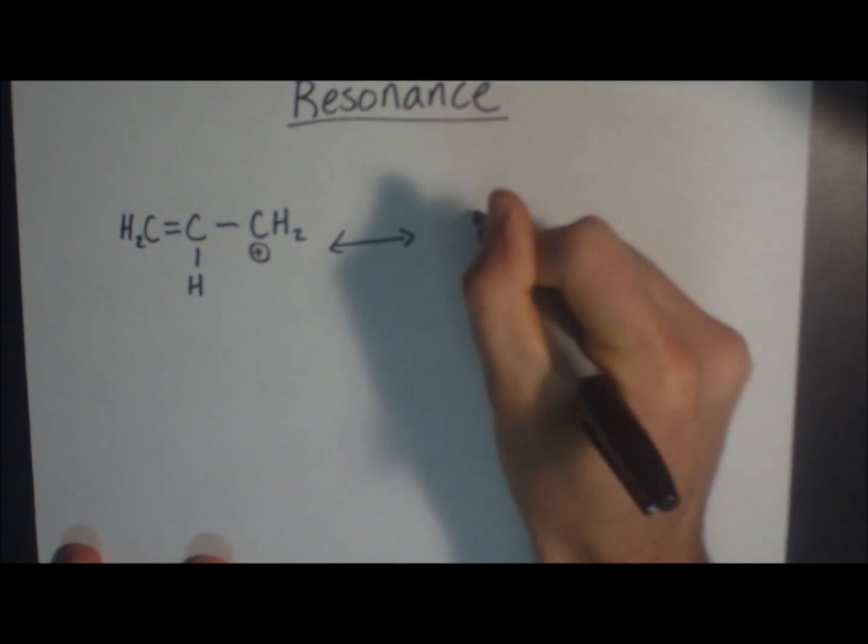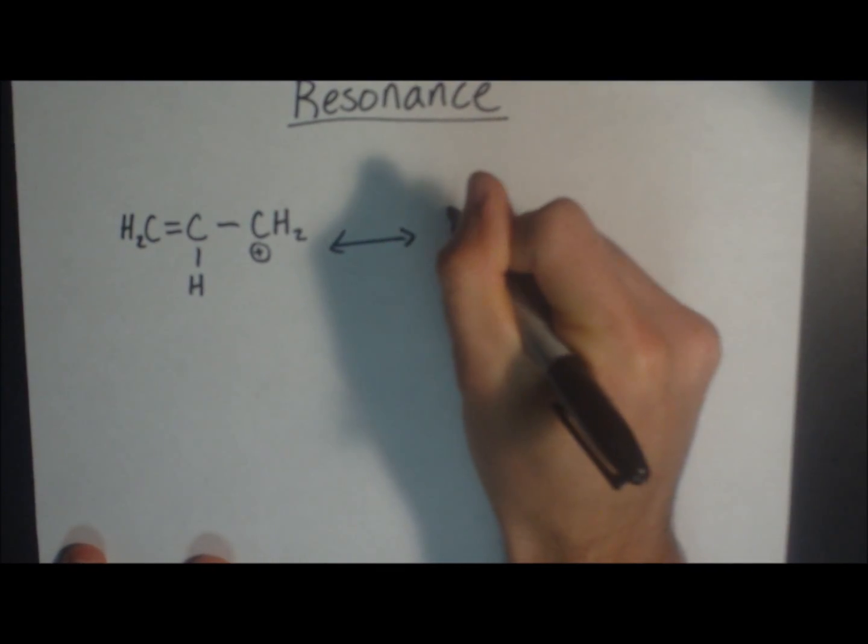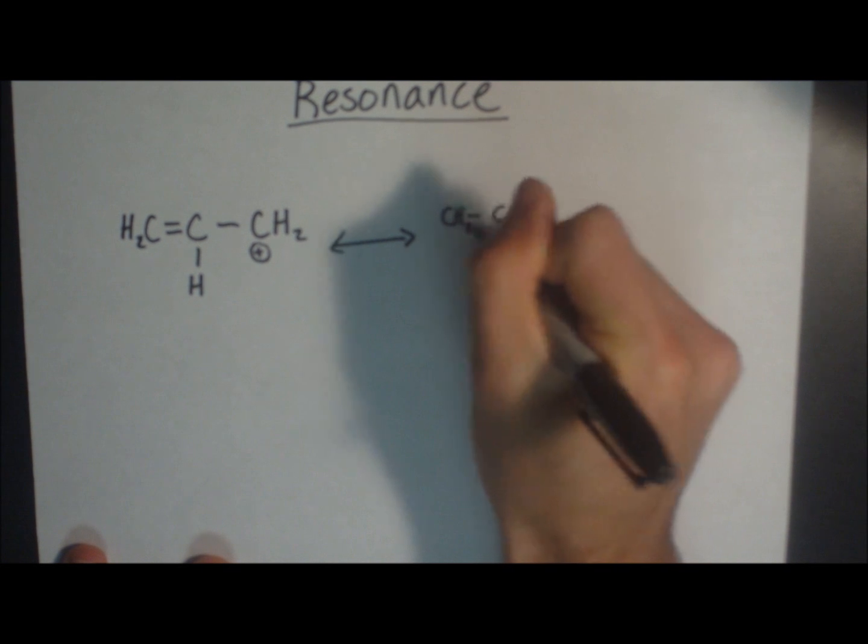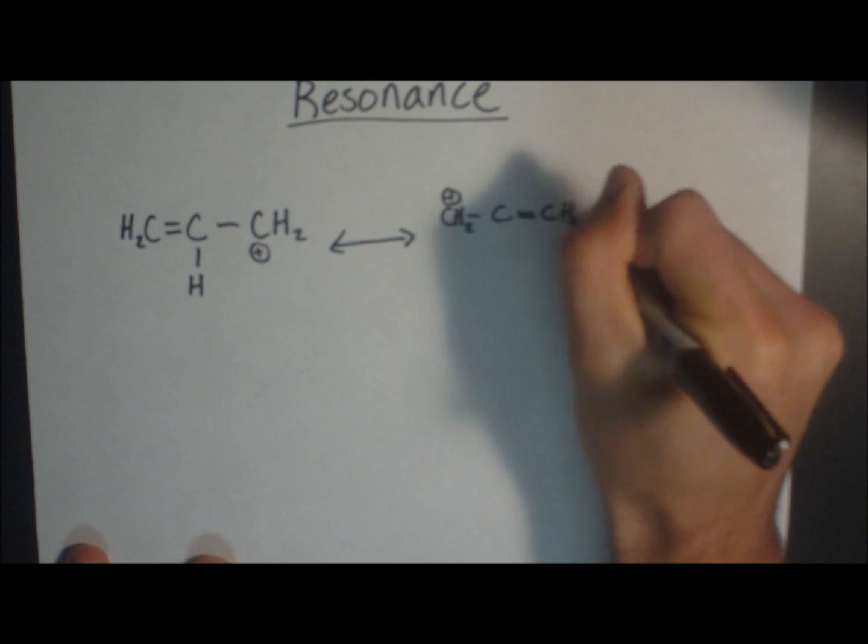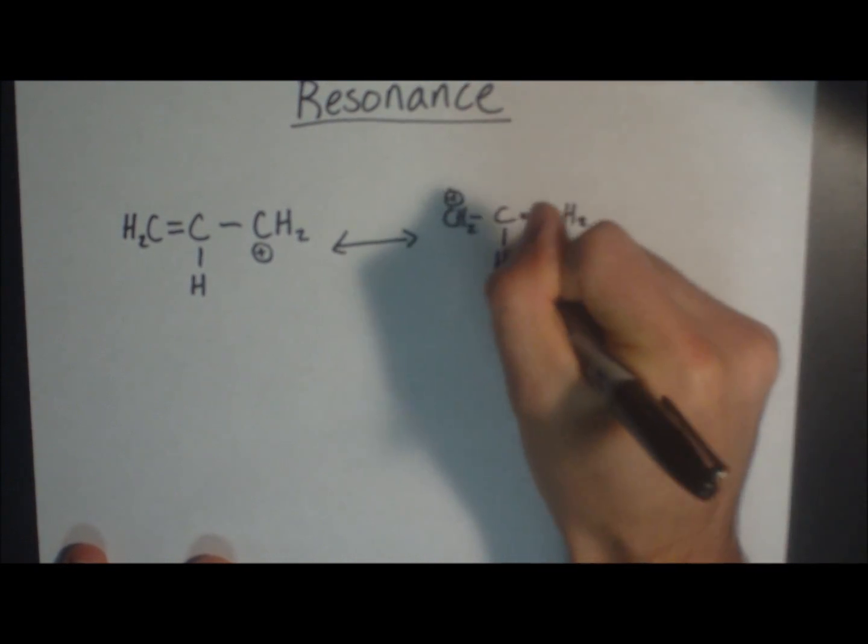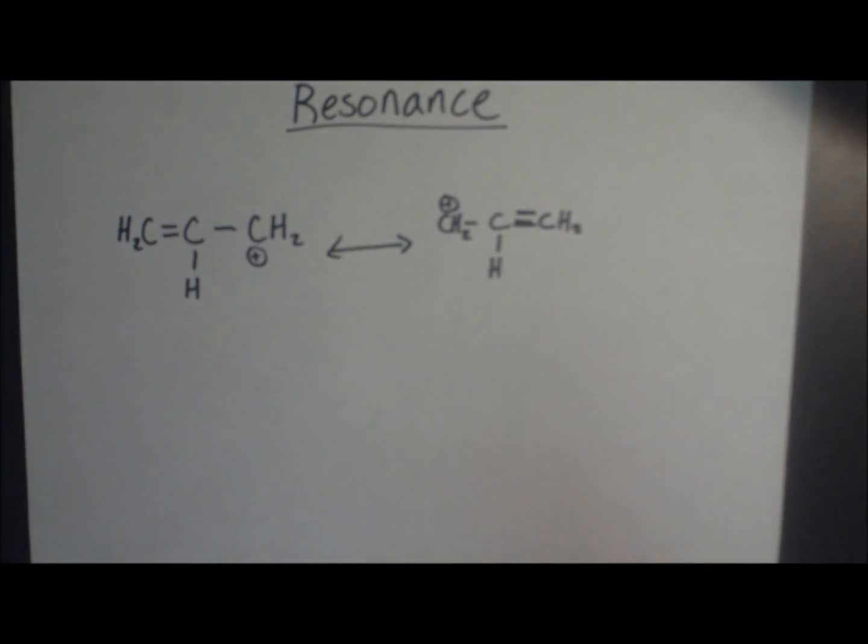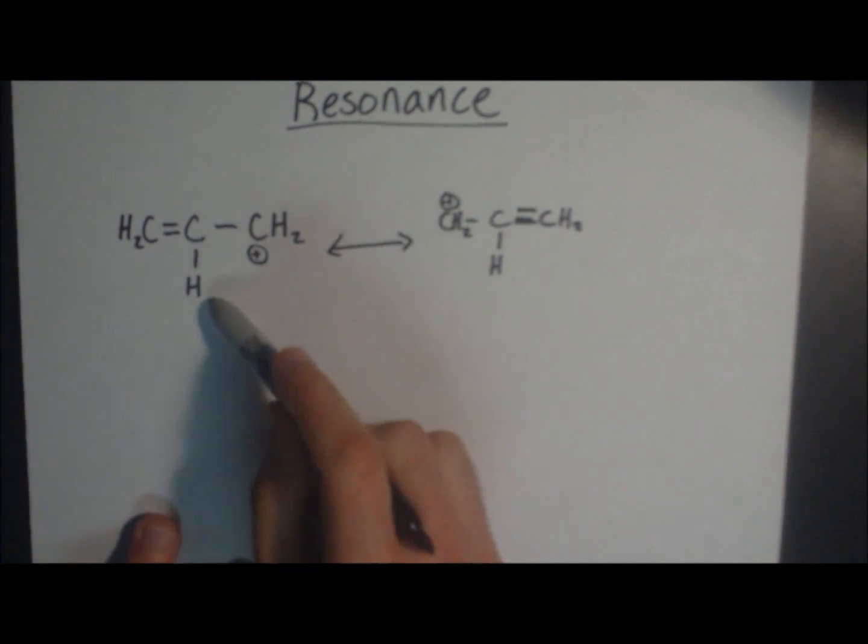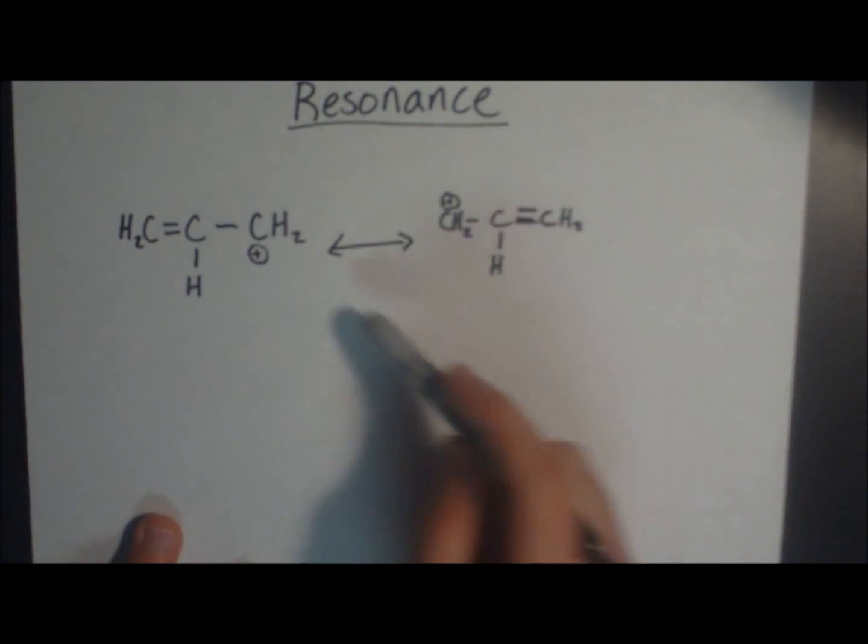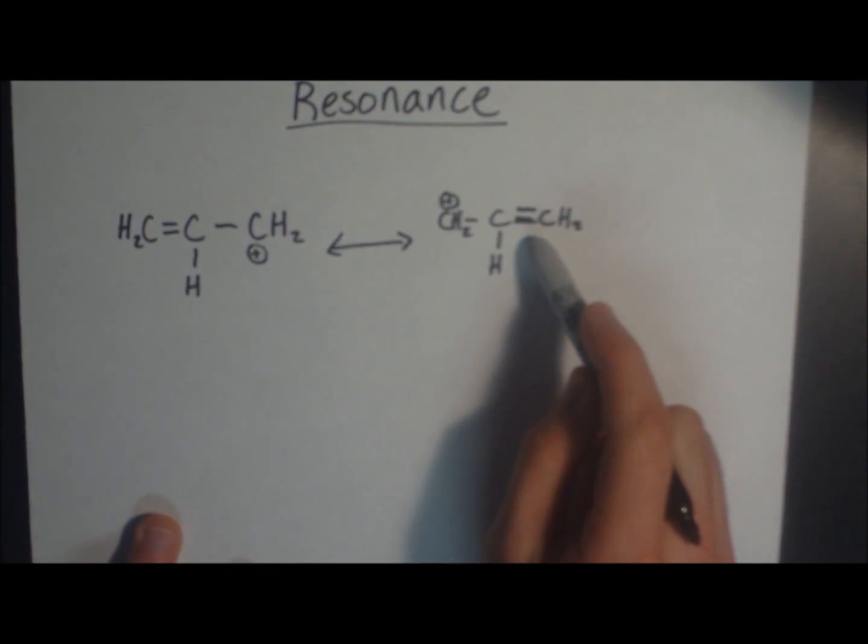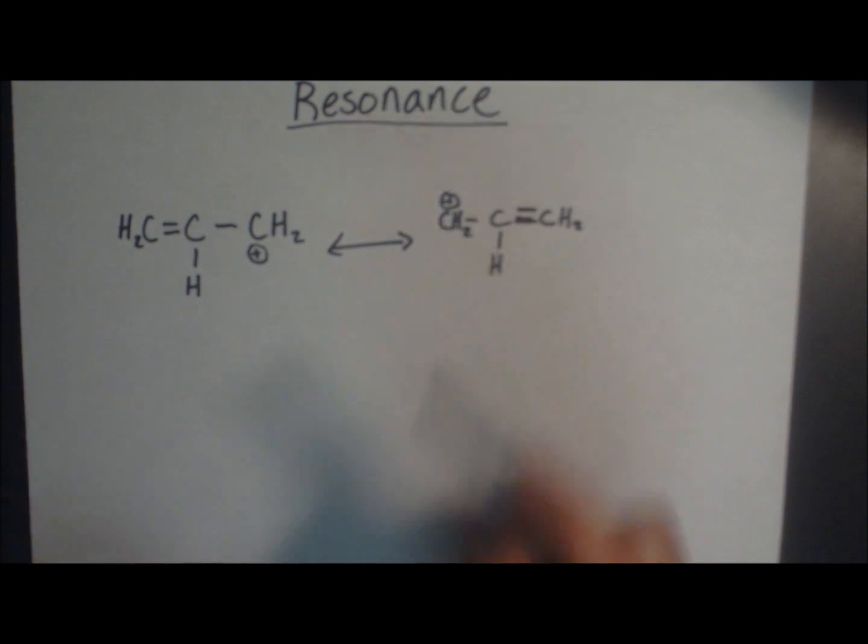So let me just draw this out. There we go. These both are the correct Lewis structures for this molecule. However, as you can see here electrons are localized in this double bond with a single bond here and a double bond here.